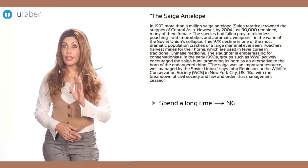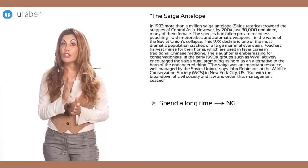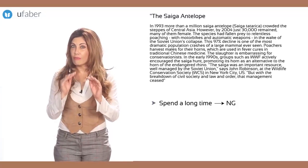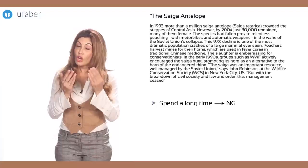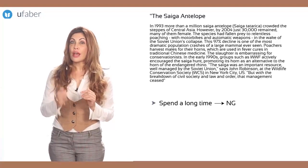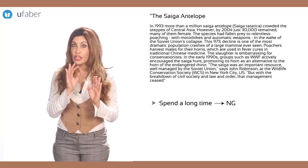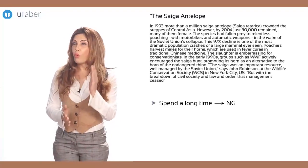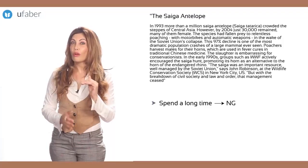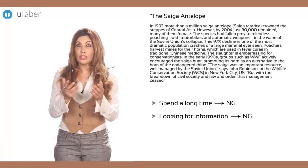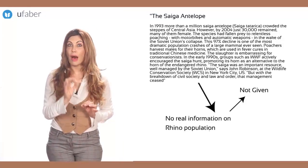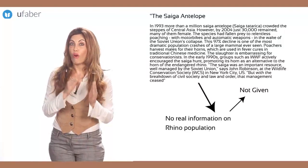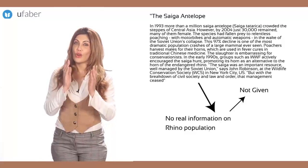Do not spend a long time looking for the answer to one question — it is probably Not Given if you cannot find it. For some questions, the text might not have any information connected to a Not Given question, not even keywords. In other situations, keywords might be found but not enough information is given to say if the statement is true or false. For example, though we do have information about the shift from hunting saiga to rhino, it is not enough for us to say True or False, so the answer is Not Given.